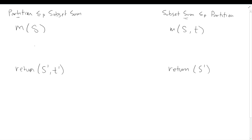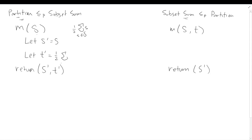In this first direction — partition reduces to subset sum — we have to create a target sum. We've already seen that in the partition problem, if we add up all the elements in S and take half of that, that's how much the subset will sum to if we can equally partition it. So in this reduction, I'm not going to change S at all. I'll let S prime equal S, and set T prime equal to one half of the sum of all elements in S.